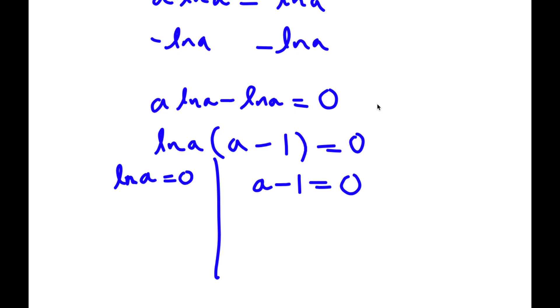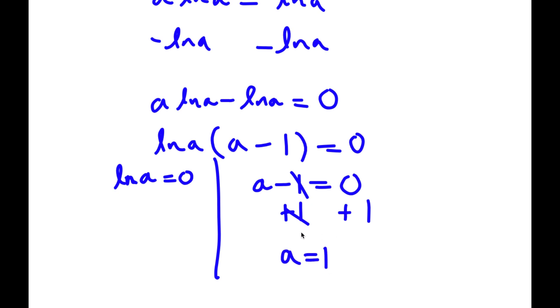For a minus one equals zero, all I have to do is add one on both sides, so I get a is equal to one.